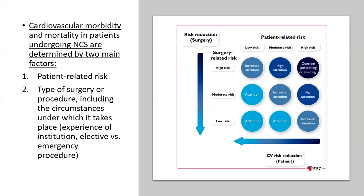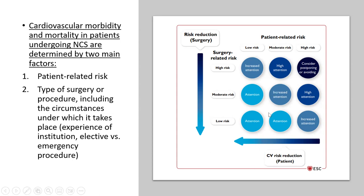The cardiovascular morbidity and mortality in patients undergoing non-cardiac surgery are determined by two main factors: patient-related risk and surgical risk. The surgical risk considers the type of procedure and the circumstances under which it takes place, including the experience of the institution and whether the surgery is elective versus emergency. This figure illustrates both sides: patient risk on one side and surgery risk on the other.